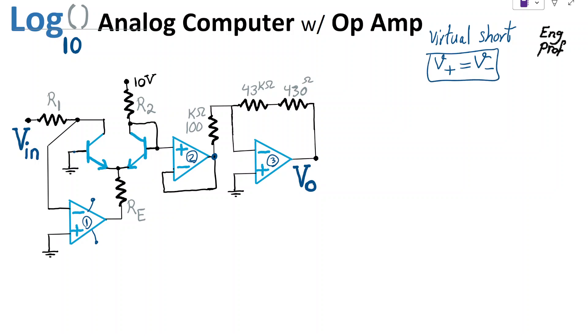For op-amp 1, the positive terminal has 0 volt connected to ground, so negative terminal is also at 0 volt. This op-amp is clearly in inverting amplification mode because the positive terminal is grounded and negative terminal is connected to branches of resistors.